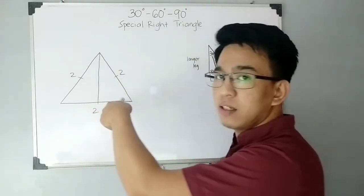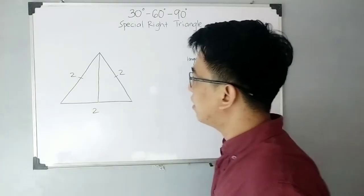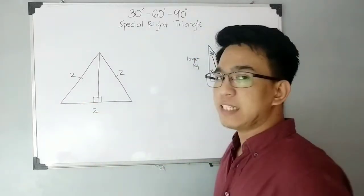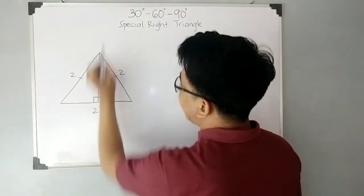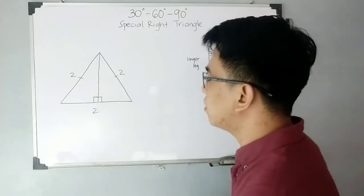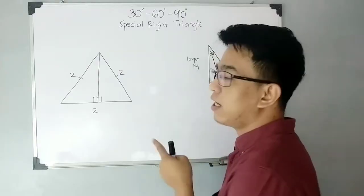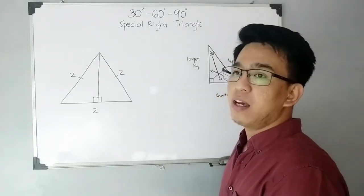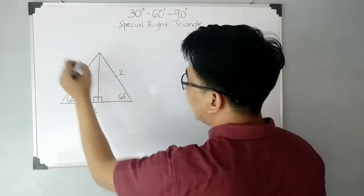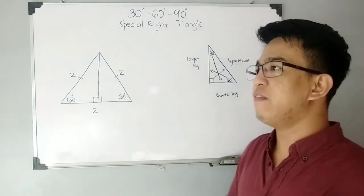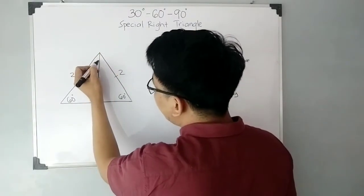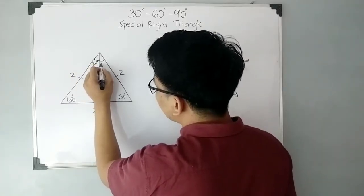We draw the altitude from this vertex going down, and since this is an altitude, this angle is 90 degrees and the other is also 90 degrees. Aside from that, it is an angle bisector — it bisects the given angle into two equal angles. Since this is an equilateral triangle, it is also equiangular, meaning all angles are 60 degrees. Because this is an angle bisector, this angle measures 30 degrees and the other angle is also 30 degrees.